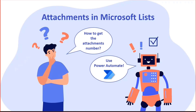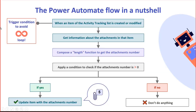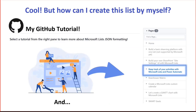So we should have a deeper look by using Power Automate. As we can see here, we have the Power Automate flow in a nutshell with some basic steps. After we get information about the attachment column, the Power Automate flow will update a specific column called attachment number, and then an icon with the exact number of attachments will be displayed in our list. My tutorial will be available in my GitHub and also in the official GitHub repository.